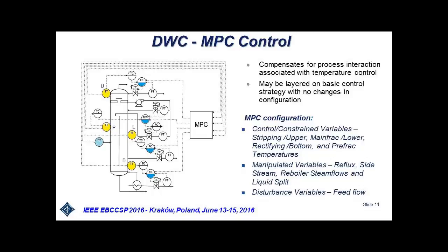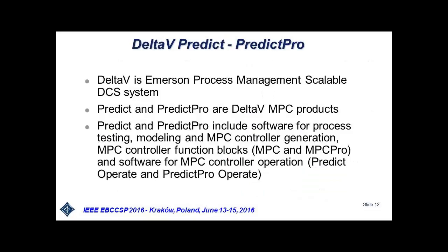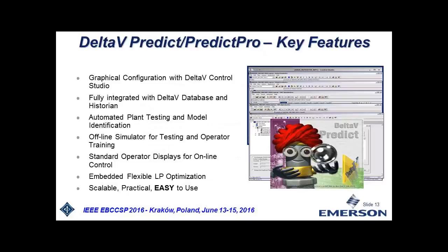The disturbance variable is definitely the feed flow, which is on the input of the column. One of the products in DeltaV that I showed is PredictPro, which is a model predictive controller. Its key features, as I discussed, include ease of use, and everything is embedded in the same standard control approach for developing configuration, modeling, and application.